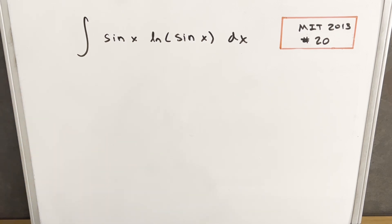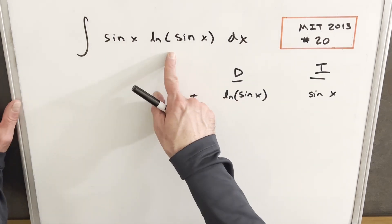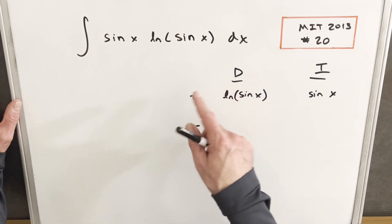What I'm going to do is integration by parts using the DI method. And what I've done is taken this. We have two functions. We want one that we want to differentiate and one we want to integrate.